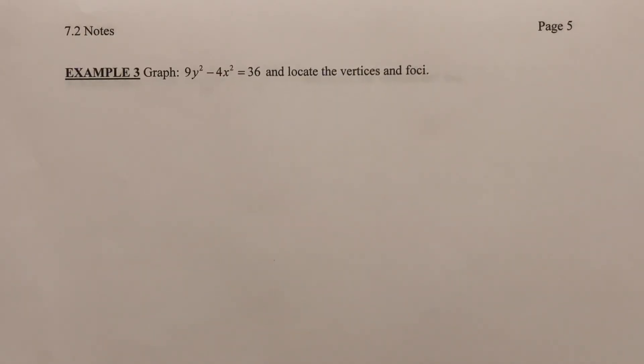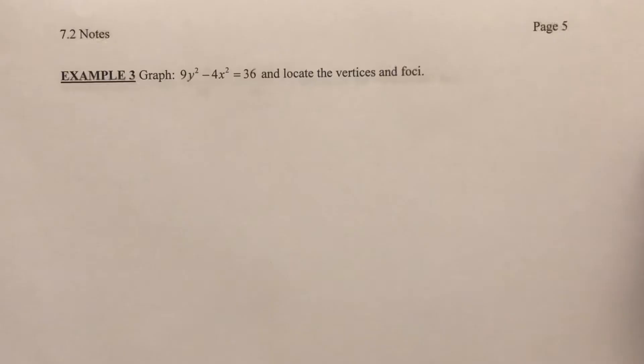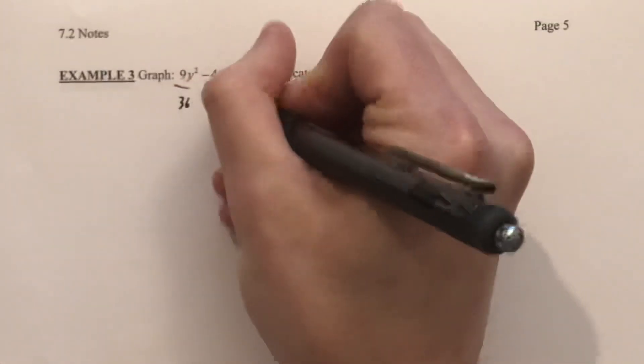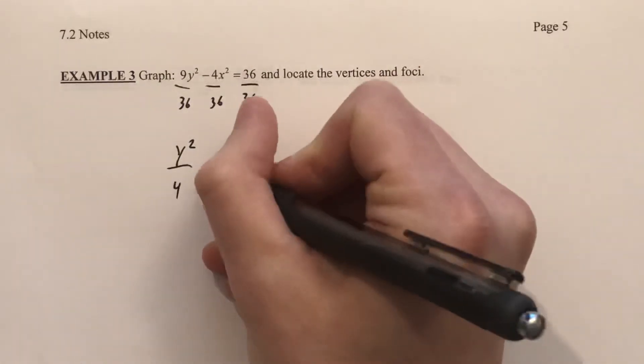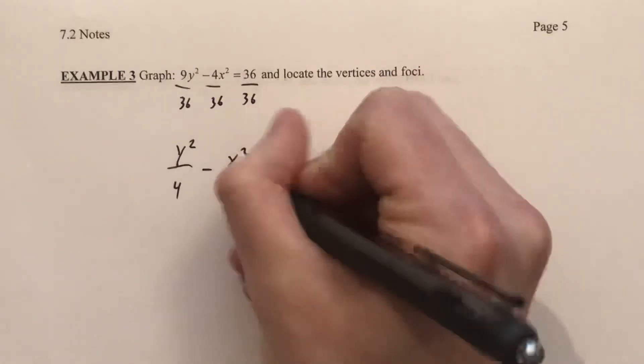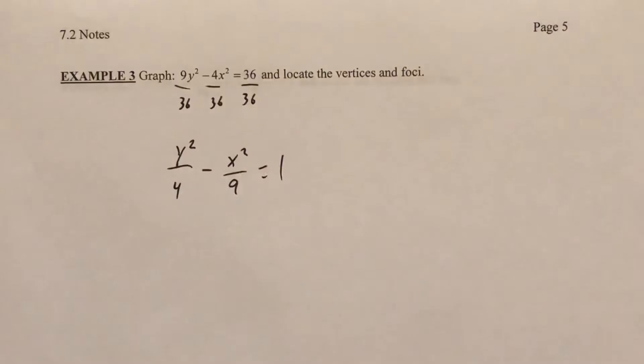So for our next example, just like with the ellipse, we know that we want our equation to be equal to 1. So with that 36 there, we'll take the step of dividing each term by 36, getting us y squared over 4 minus x squared over 9 equal to 1.